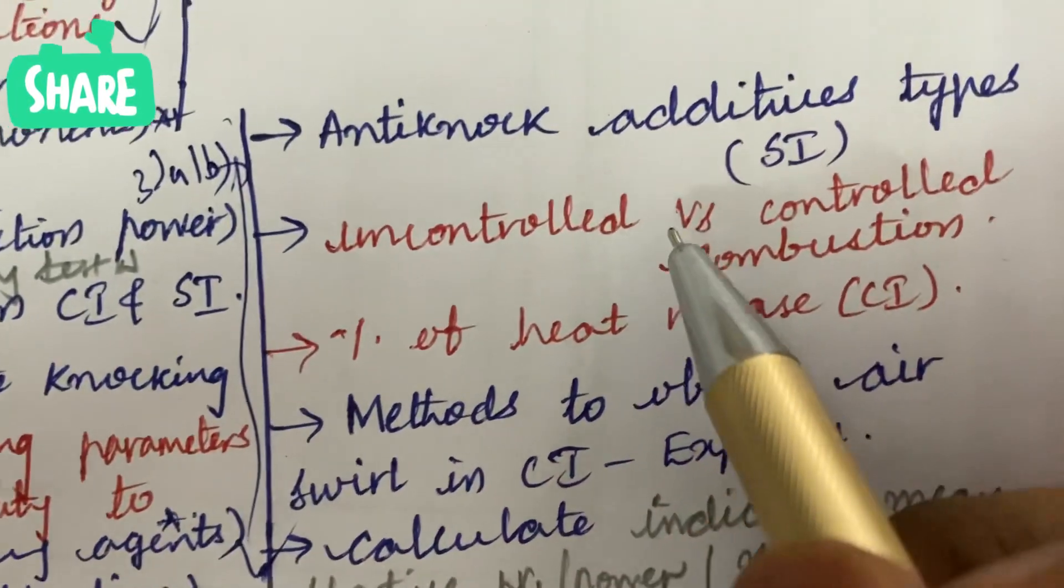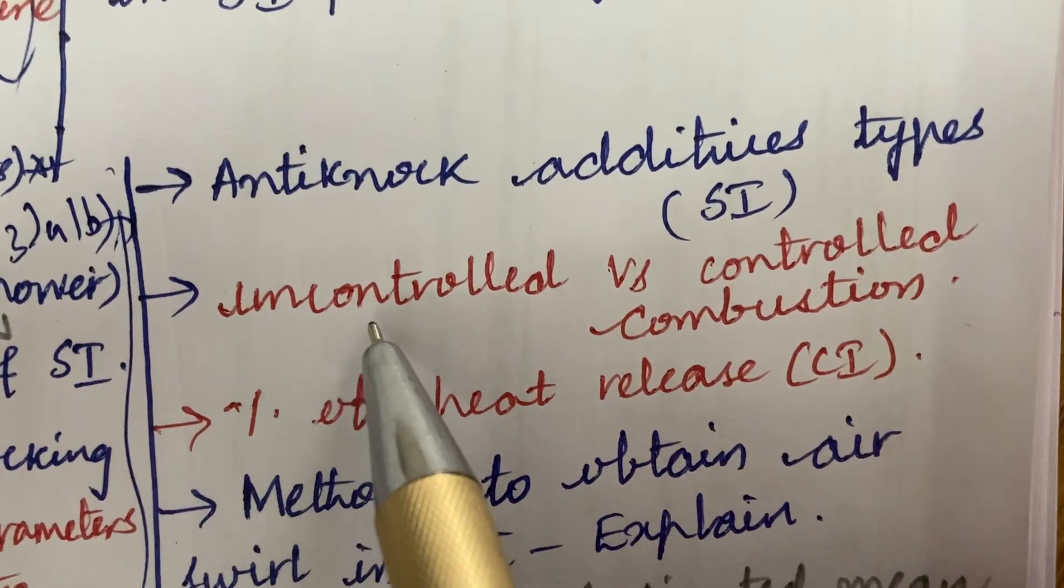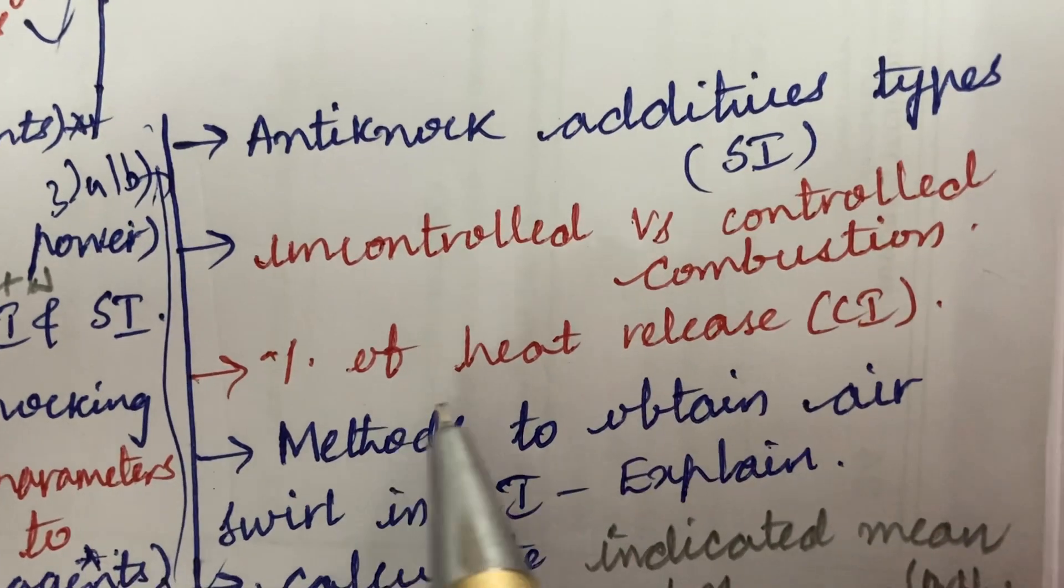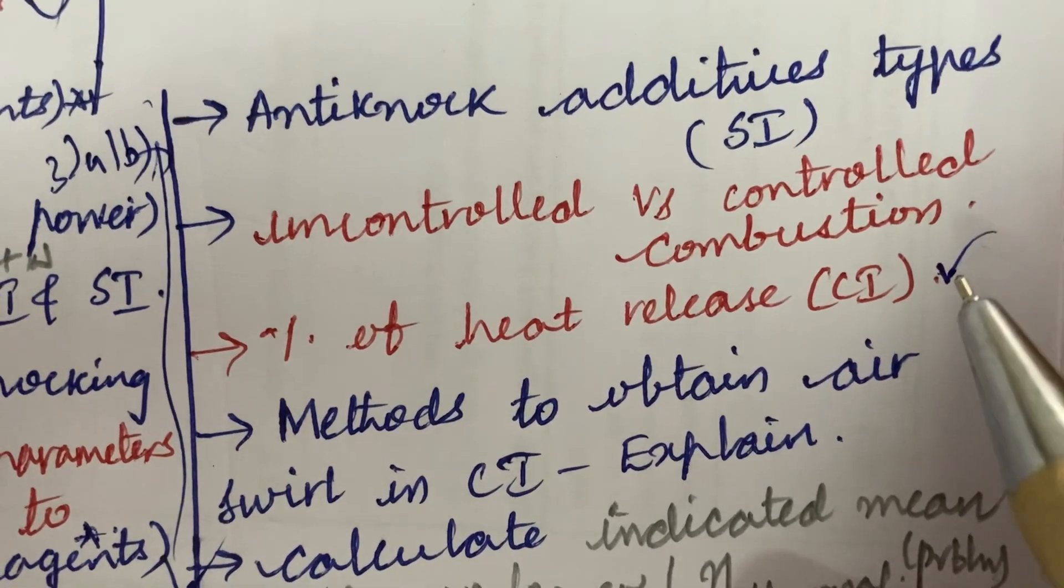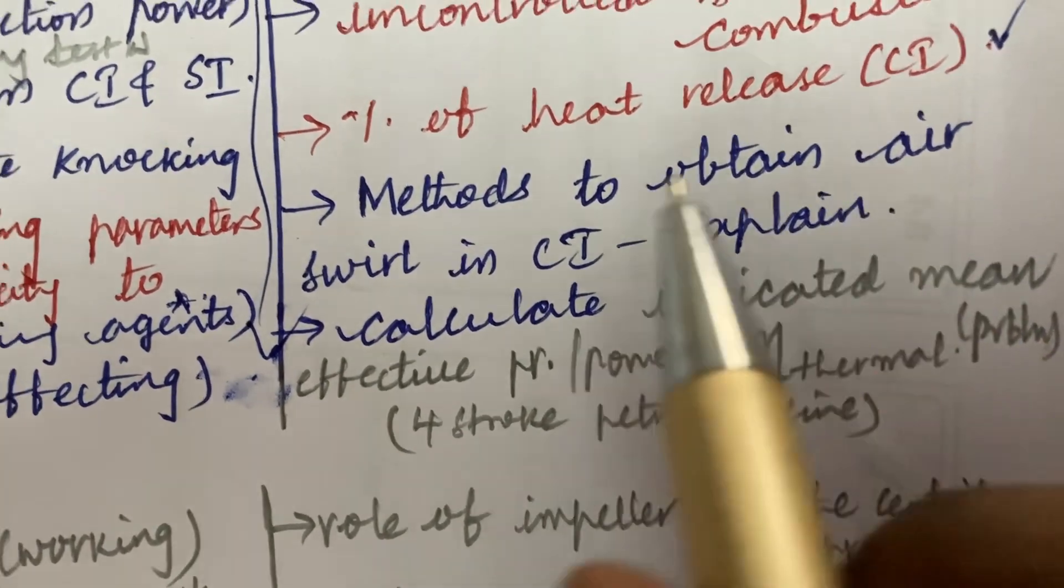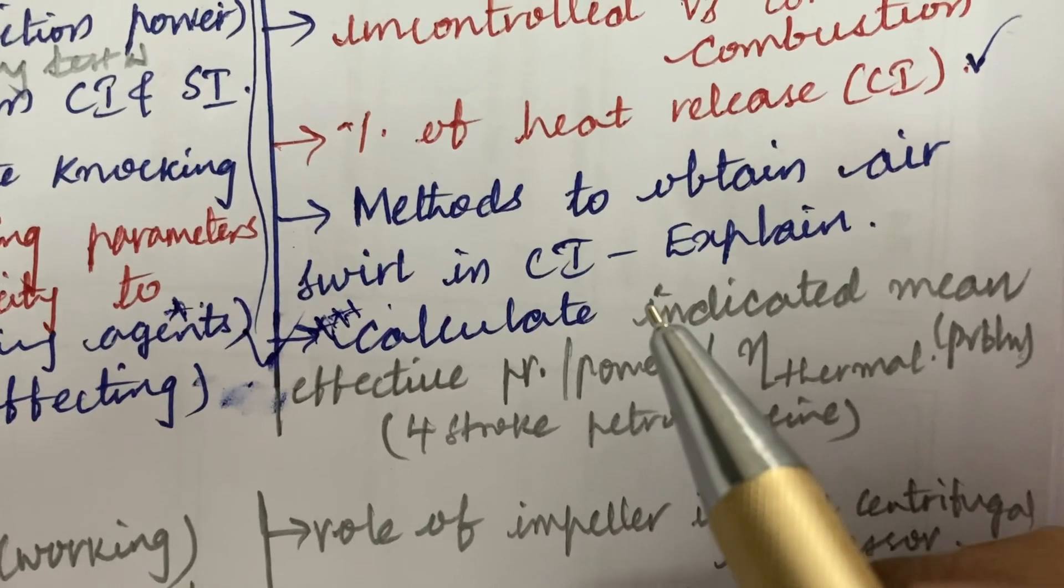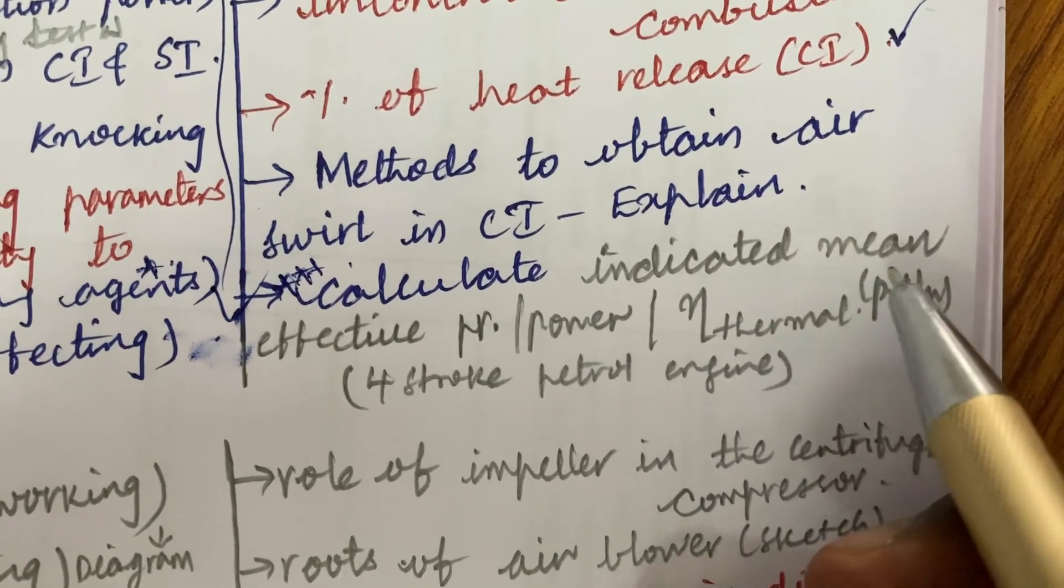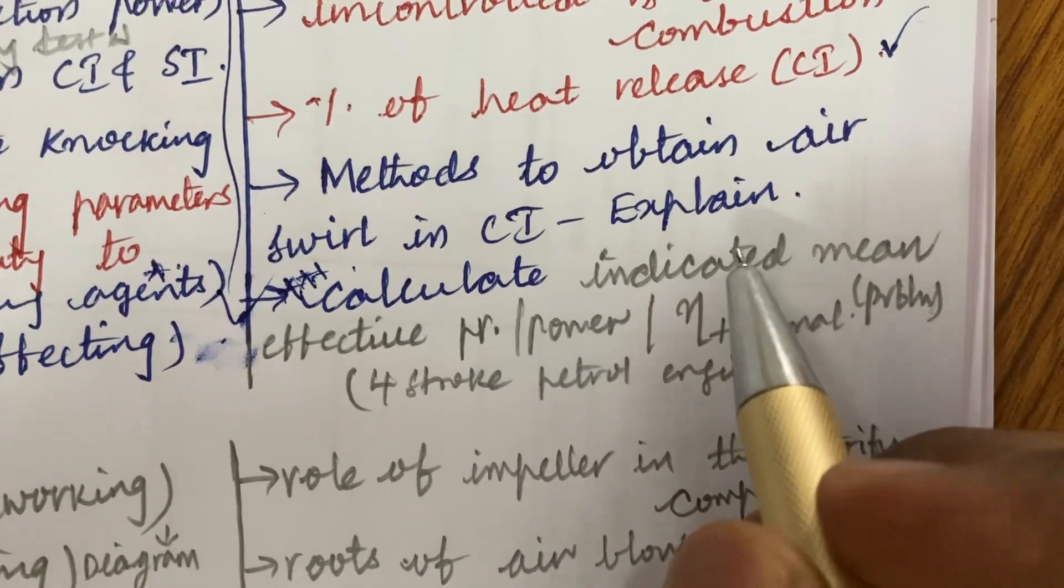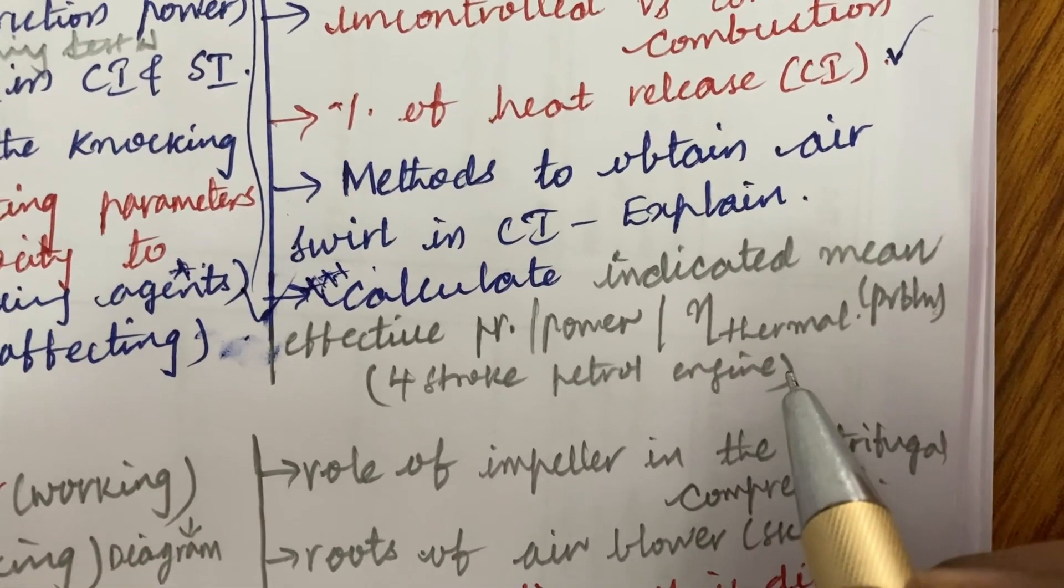Later, anti-knocking additives types in SI engine as well as the differences between uncontrolled and controlled combustion and the percentage of heat release in CI engines and the methods to obtain air swirl in CI engine and explain. Also, a problem for sure you will be going to get from the 4A or 4B to calculate the indicated mean effective pressure or indicated power or the thermal efficiency for a 4-stroke petrol engine.